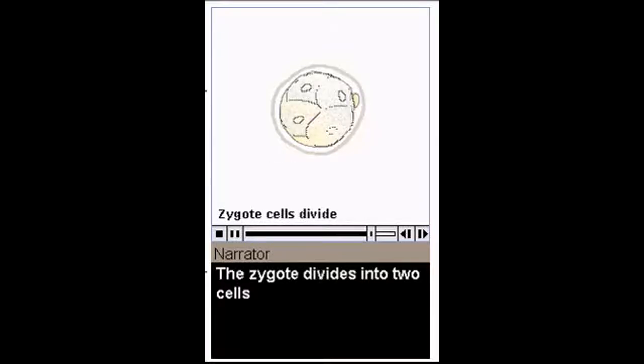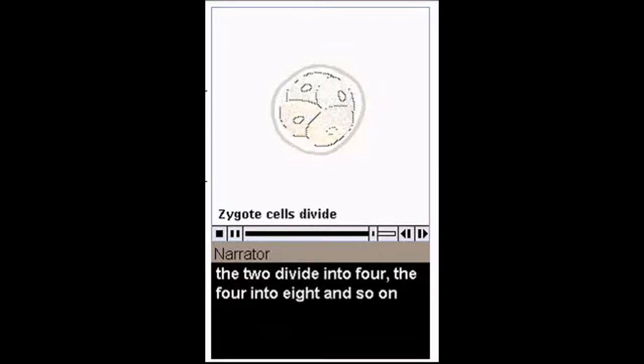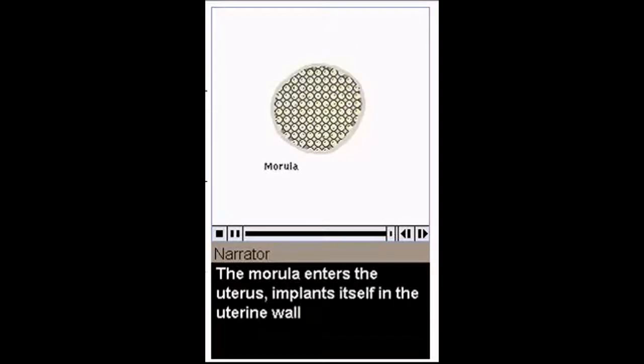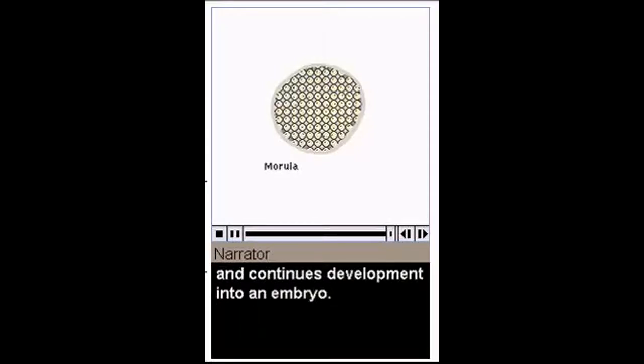The zygote divides into two cells. The two divide into four, the four into eight, and so on until there is a hollow ball of cells called a morula. The morula enters the uterus, implants itself in the uterine wall, and continues development into an embryo.